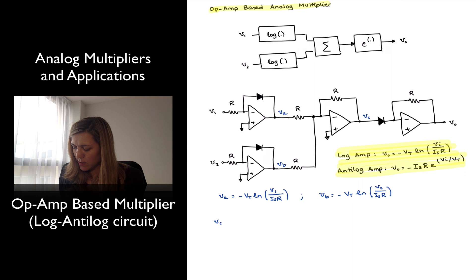vC is going to be the sum of those two signals. Notice that this is an inverting summing amplifier, and so each one of the signals is going to be multiplied times the weight of minus 1.